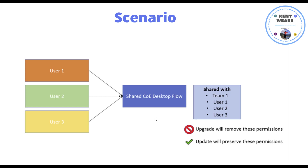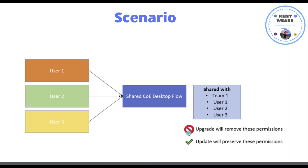The key thing to understand is that when you choose upgrade, you will remove any of the existing permissions. If you choose update, you will preserve those permissions — but there are some caveats there as well. I was initially concerned that users with flows running on a schedule or ad hoc could suddenly lose permissions to this desktop flow, causing breaks in their scenario and unexpected downtime for their bots.